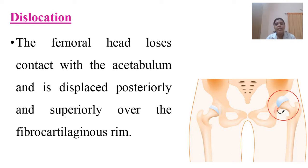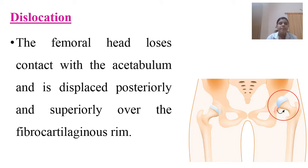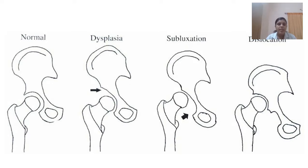The third type is dislocation, where there is either complete or partial dislocation of the femoral head from the socket. The head can be displaced either posteriorly or superiorly over the fibrocartilaginous ring. A comparison image shows: normal hip with the ball attached in the socket; dysplasia with a large shallow socket; subluxation with ligament tear; and full dislocation.